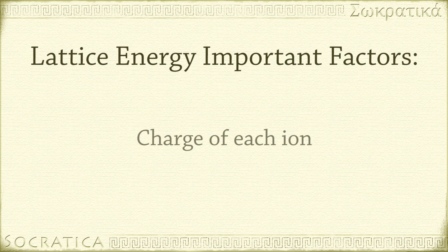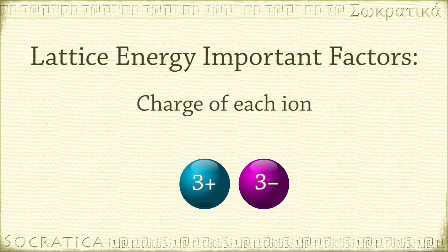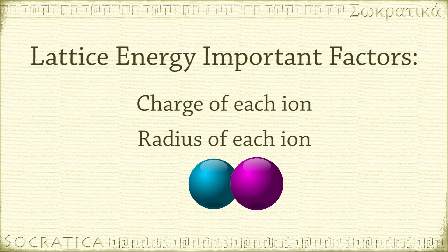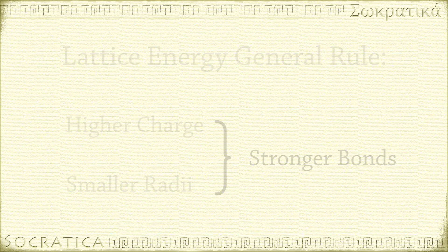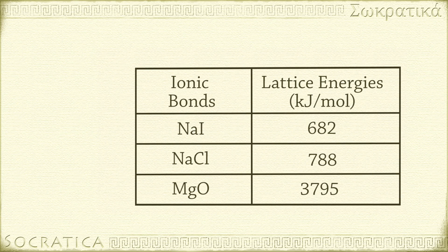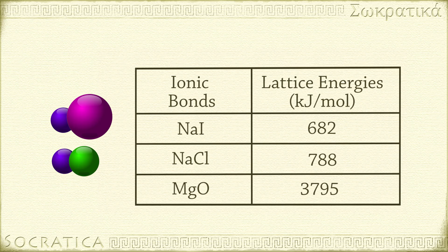This has to do with the charge of each ion, which determines the strength of the attraction, and the radius of each ion, which influences how closely the ions can be held together. In general, higher charge and smaller radii lead to stronger bonds. For instance, sodium iodide, NaI, made of Na+ and I−, has a lattice energy of 682 kJ per mole. The ionic radius of iodide is larger than the ionic radius of chloride, and so NaI has a slightly weaker bond than NaCl, because the ions aren't held as closely together.